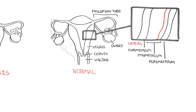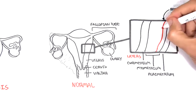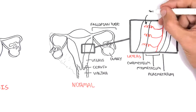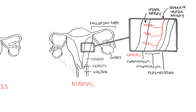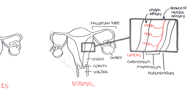Along the myometrium, you have branches of the uterine artery, which has more branches called the spiral arteries that go all the way up to the endometrium. These spiral arteries help the endometrium grow during each menstrual cycle by delivering hormones and nutrients. The endometrium is the layer which sheds during periods, and a new layer will grow, and essentially the endometrium becomes thick once again.